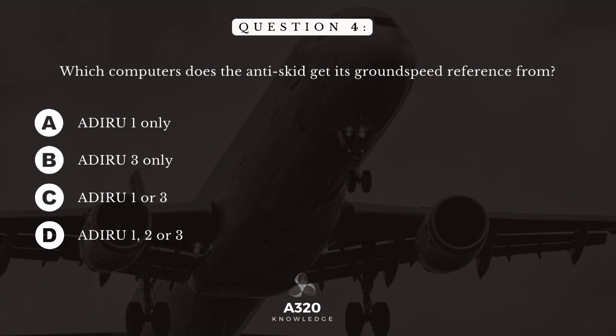Question 4. Which computers does the anti-skid get its ground speed reference from? A. ADIRU-1 only. B. ADIRU-3 only. C. ADIRU-1 or 3. D. ADIRU-1, 2 or 3.